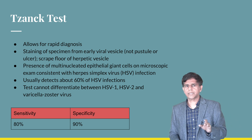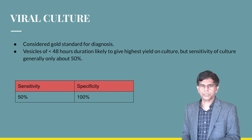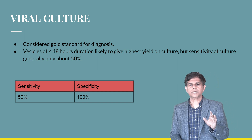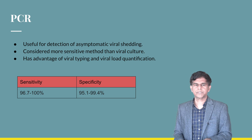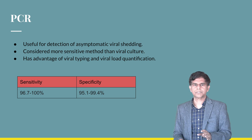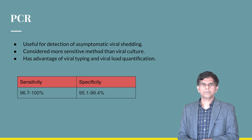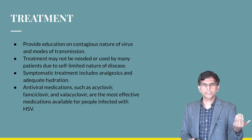Viral culture has a sensitivity of around 50 percent and specificity of 100 percent. PCR offers high sensitivity and specificity in the 90 to 95 percent range.